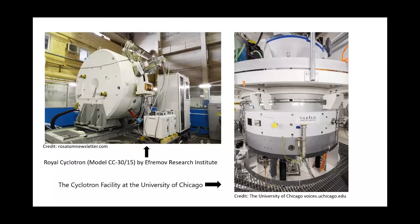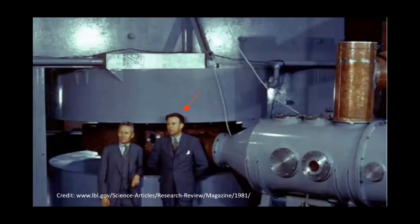A cyclotron is one of the simplest and earliest particle accelerators. More specifically, the cyclotron accelerates charged particles. It was invented by Ernest Lawrence in 1930 at UC Berkeley. Lawrence got the Nobel Prize in Physics for inventing the cyclotron.